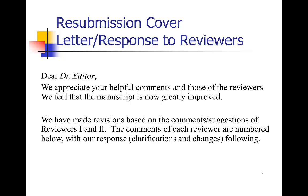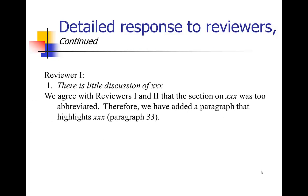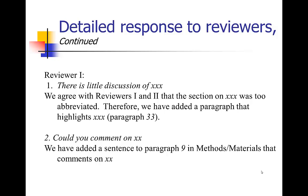Address each comment point by point with numbers. For example: reviewer one said there's little discussion of X — you respond: 'We agree with reviewer one that the section on X was too abbreviated. Therefore we have added a paragraph that highlights this,' and point out the specific paragraph. Address every comment very specifically. If it's a small thing the reviewer is asking you to change, go ahead and change it. If it's something you really disagree with and think the reviewer got it wrong, explain why you're not making that change. You don't have to make every change they request, but you do have to explain why if you choose not to.